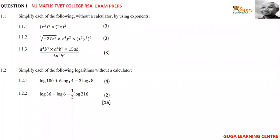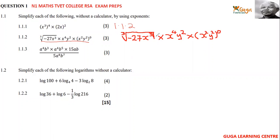Now let's go to question 1.1.2. We simplify the expression: cube root of negative 27x³, multiplied by x to the power 4 times y squared, multiplied by x squared y squared raised to zero. We start by removing the cube root — remember there is a power of 1 that you don't see.